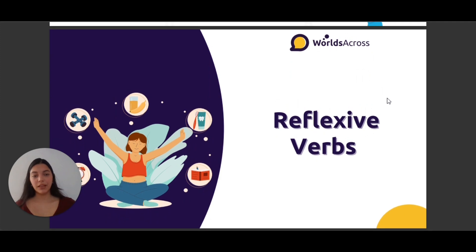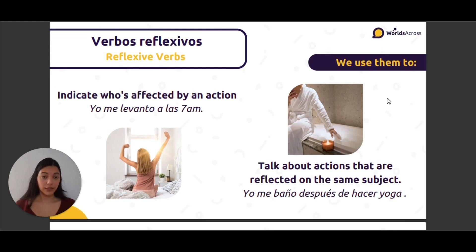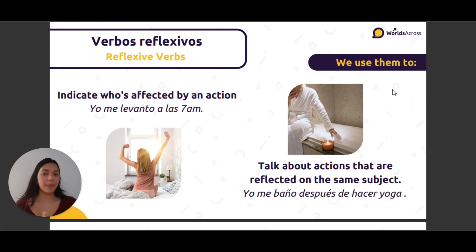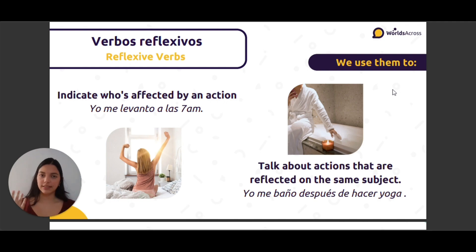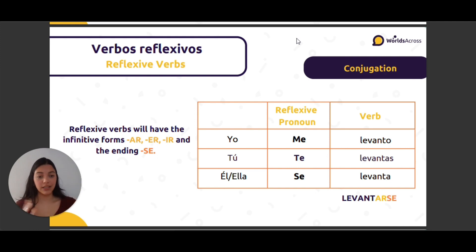Now we're going to see reflexive verbs, verbos reflexivos in Spanish. We use them to indicate who is affected by an action. Yo me levanto a las siete de la mañana. Or to talk about actions that are reflected on the same subject. Reflexive verbs will have the infinitive forms — AR, ER, IR — meaning these verbs are not yet conjugated, and the ending is -se.